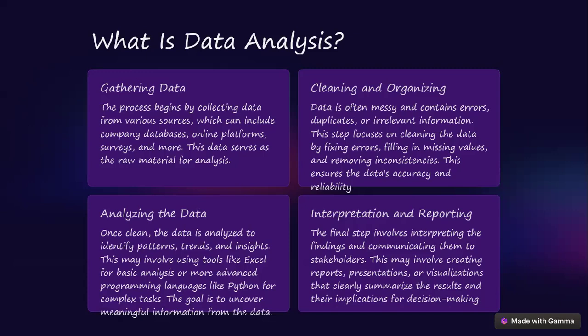Once you've fixed data issues — removed redundant data, cleaned duplicates, filled missing values, removed inconsistencies, and ensured data accuracy — you can move to the third step: analyzing the data. The fourth step is interpretation and reporting. So the four key parts of a data journey are: gathering data, cleaning and organizing, analyzing the data, and representing or reporting that data so the organization can make an informed decision.